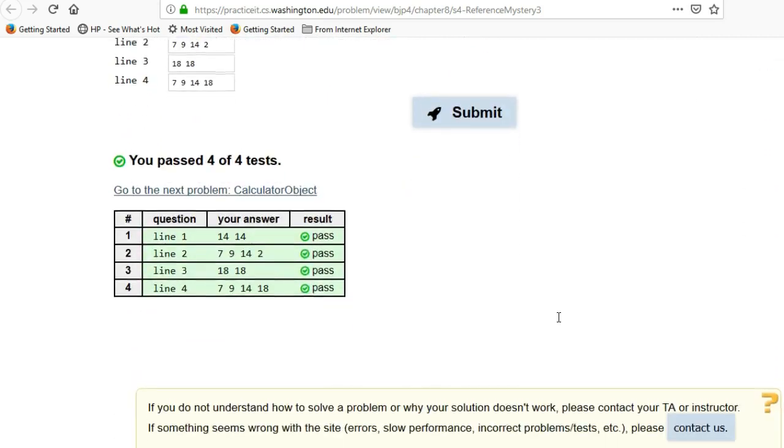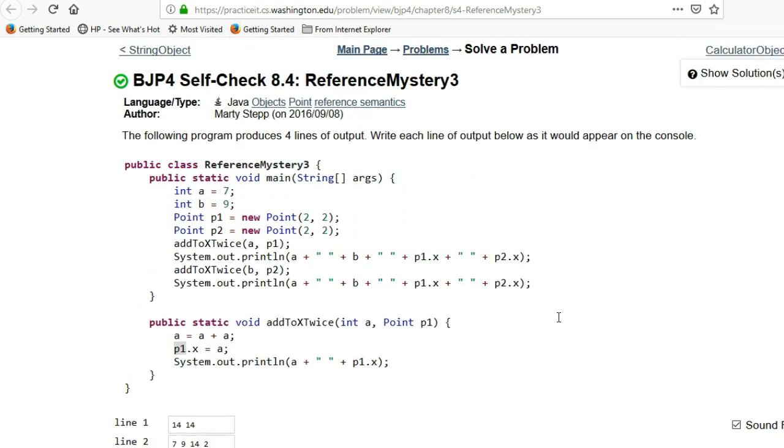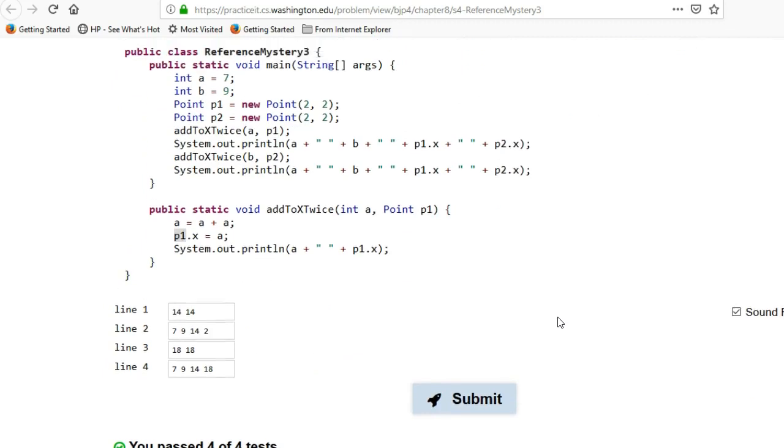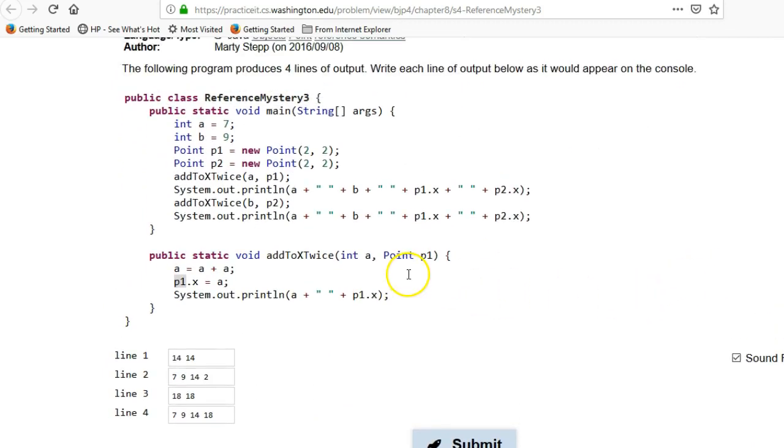So what was this problem about? This problem is about reference passing, and whereas we learned about reference passing in chapter 7 for arrays, the same thing applies to classes in chapter 8. When you pass in a class, it allows the called function to modify that member from the caller. And I don't like these mystery problems because they're specifically calling this point p1 trying to confuse you. Is it this p1? And really they shouldn't do that.